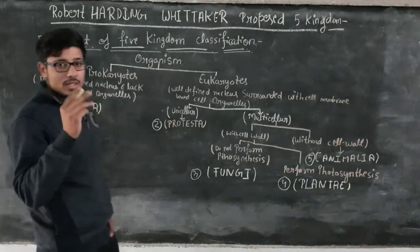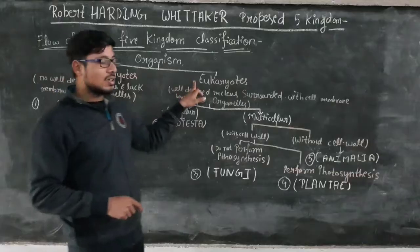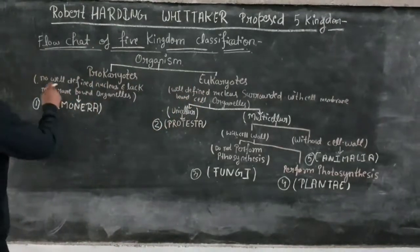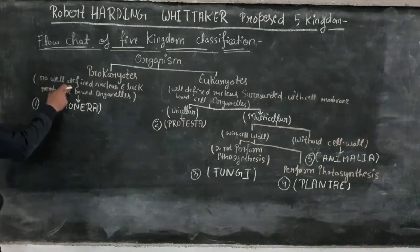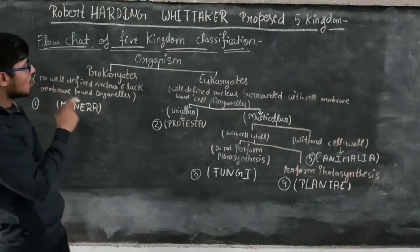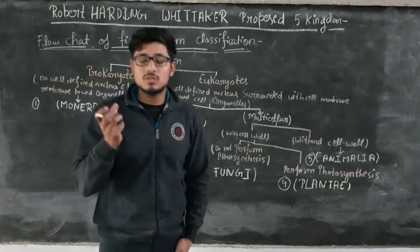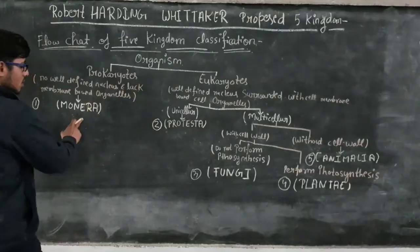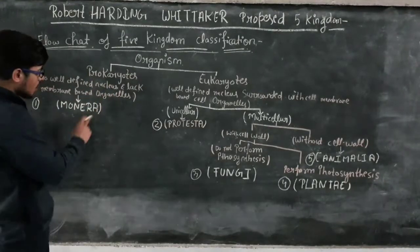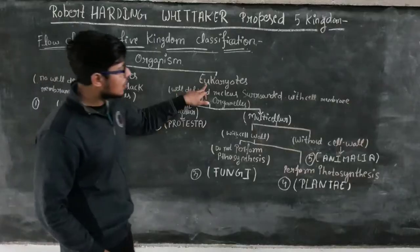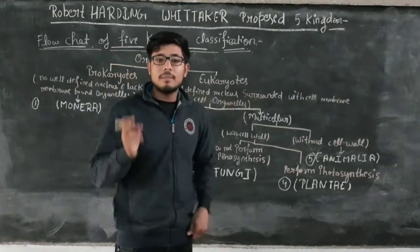The flow chart shows us that organisms are further divided into two parts. The first part is called Prokaryotic Organisms and the second part is called Eukaryotic Organisms. Prokaryotic organisms are those which have no well-defined nucleus and lack membrane-bound organelles. These prokaryotic organisms are grouped under the kingdom Monera. Eukaryotic organisms are those where the well-defined nucleus is surrounded by the cell membrane and has membrane-bound organelles.